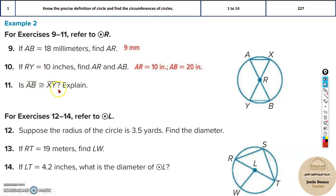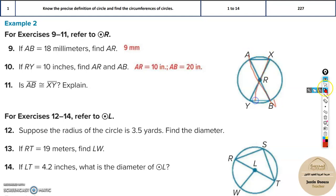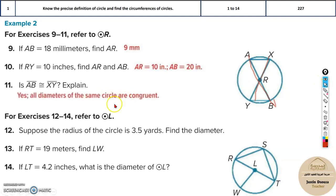Now over here, AB and XY — are they congruent? Yes, they are congruent because they are both diameters. The diameters and radii of a circle are all congruent to each other. Diameters are congruent to other diameters, and radii are congruent to other radii.